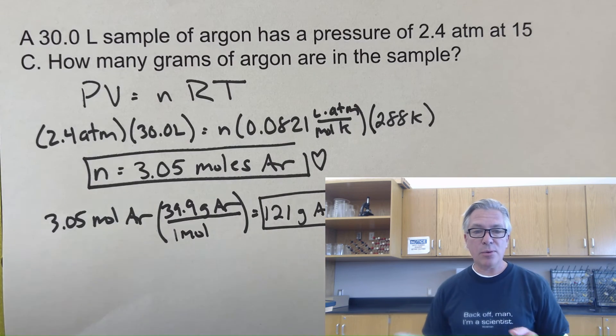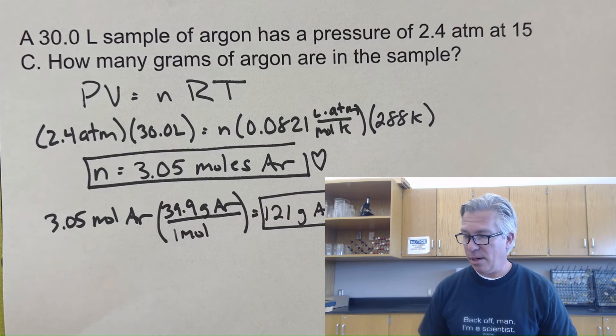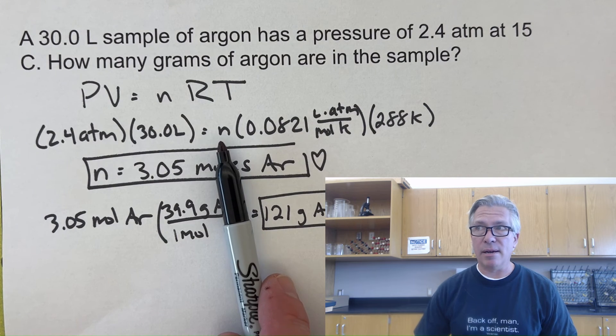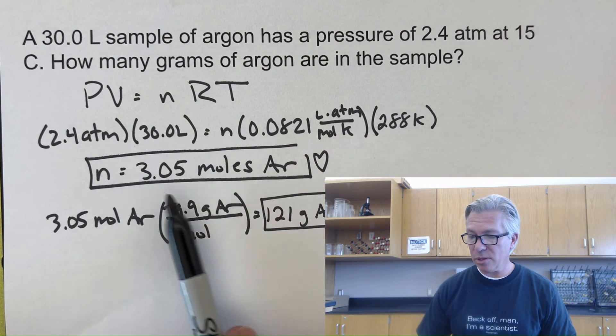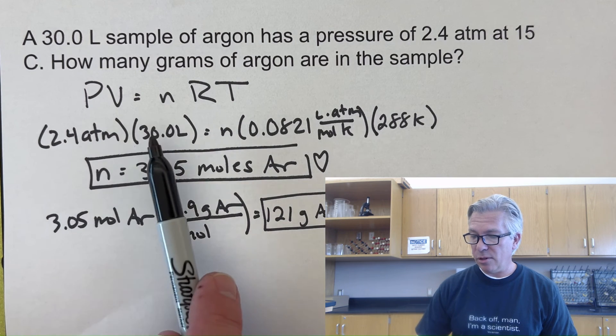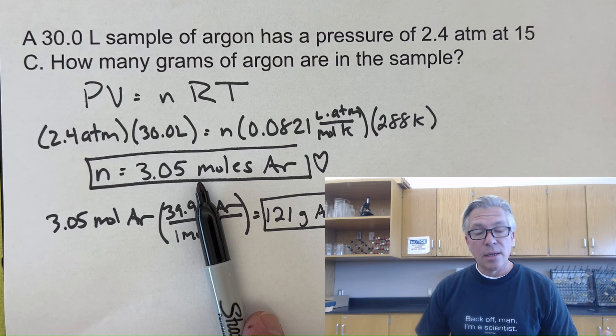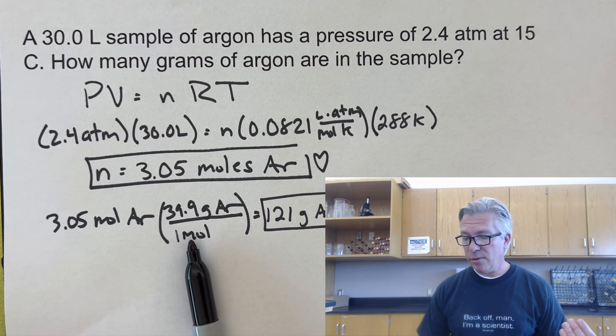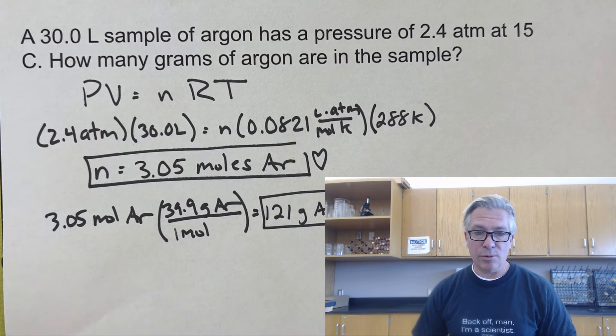Congratulations if you were able to do it and come up with an answer of 121 grams of argon, then you did it correctly. We plugged in everything we knew. In this case, we didn't know how many moles we had. We had to figure out how many moles and then change it into grams. Find out how many moles because you have pressure, volume, and temperature. Works out to be 3.05 moles of argon. The question asked for grams, so I went to my periodic table and found that one mole of argon weighs 39.9, so three times that is 121 grams of argon.